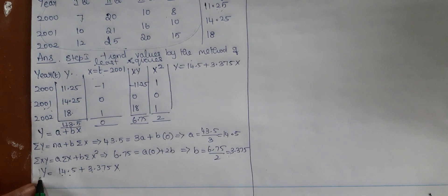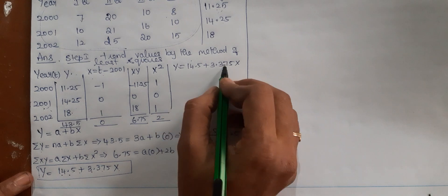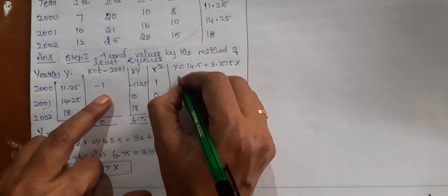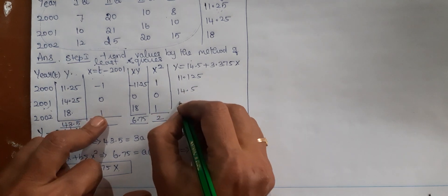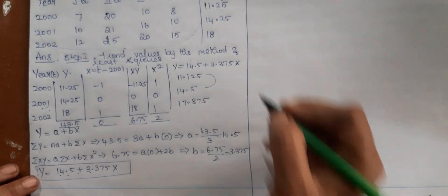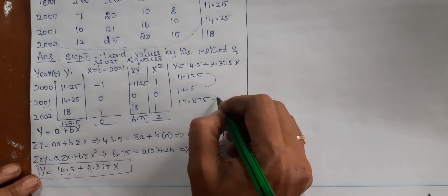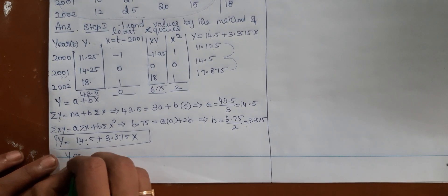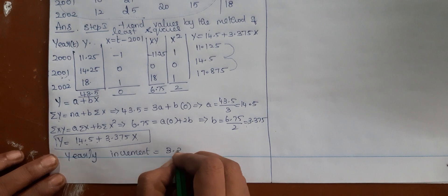Your trend line is y equal to 14.5 plus 3.375x. With this trend line as the formula, estimate the trend value for each year. Put x equal to minus 1 and you get 11.125. Put x equal to 0 and you get 14.5. Put x equal to 1 and you get the next value. The difference between consecutive values is 3.375 — for example, 14.5 minus 11.125 equals 3.375.